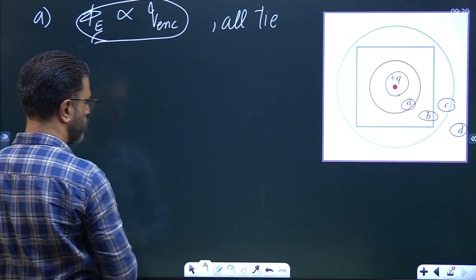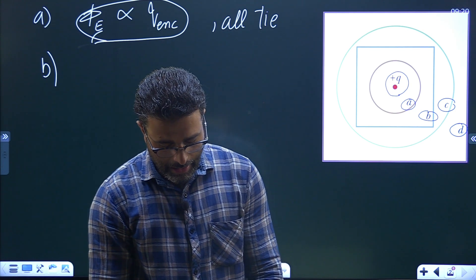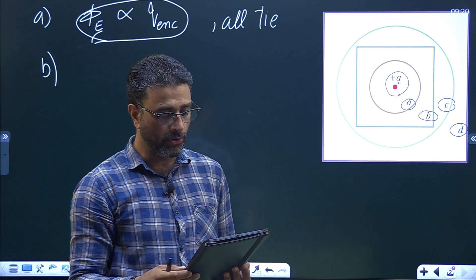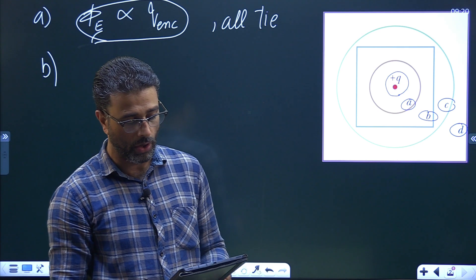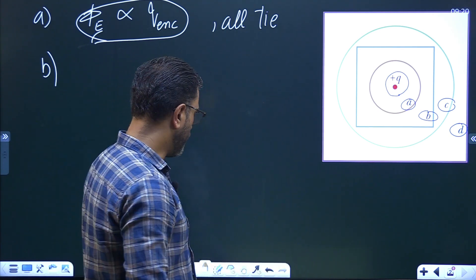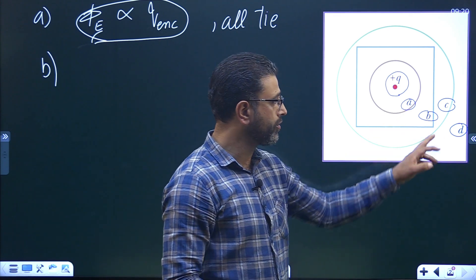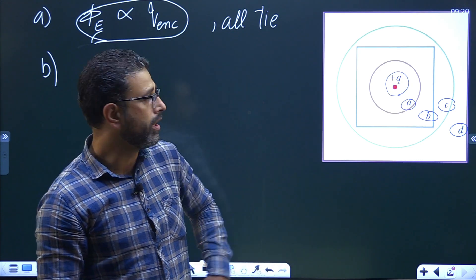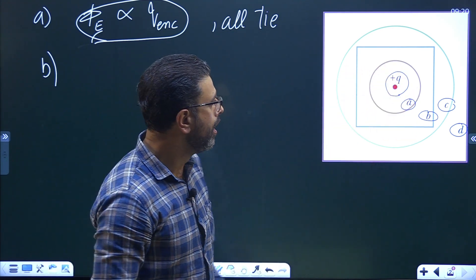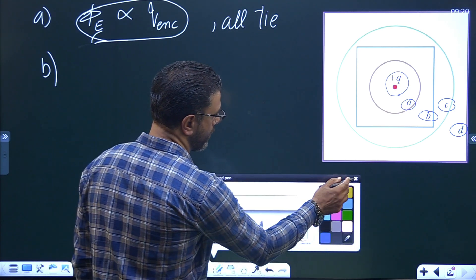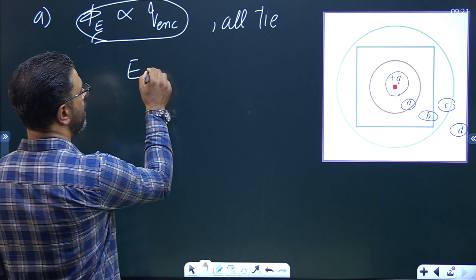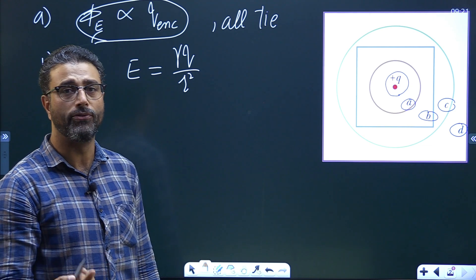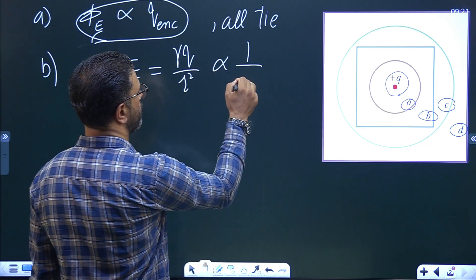Now let's move to Part B: rank the magnitudes of the electric fields on the surfaces, greatest first, and indicate whether the magnitudes are uniform or variable along each surface. The field due to a point charge is equal to kQ divided by R squared, where k is the electrostatic constant 1/(4πε₀). So the field is inversely proportional to R squared.